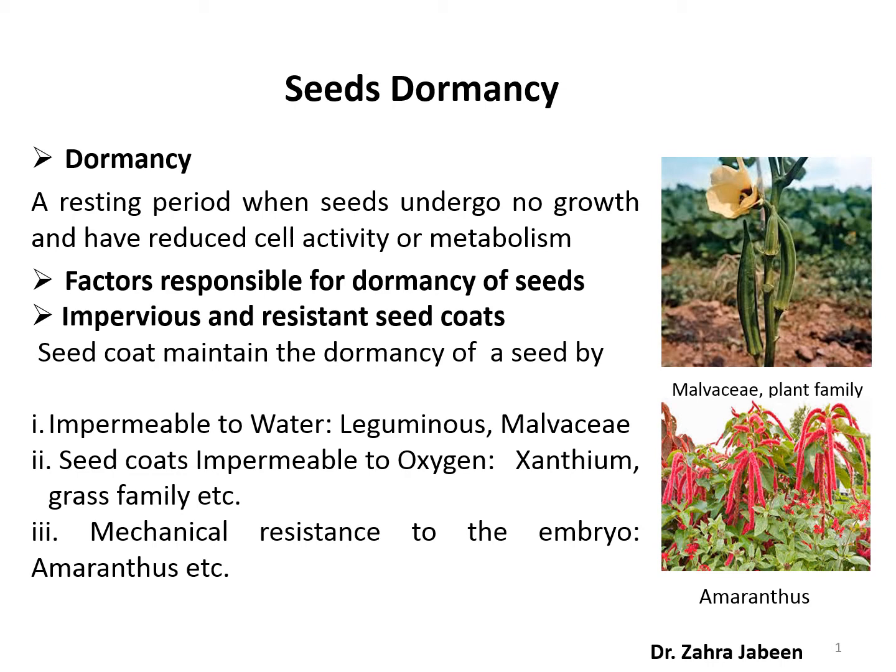For instance, if we properly store wheat seeds, they can still germinate after 15 years. So dormancy is a resting period when seeds undergo no growth and have reduced cell activity.